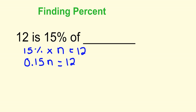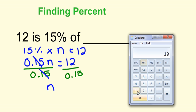I want to get n by itself. So I'm going to divide both sides of my equation by 0.15. And if I do that on this side, they're going to cancel out. I'm left with n. On my other side, I have 12 divided by 0.15.